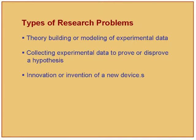Broadly, types of research problems include: theory building or modeling of experimental data — you have experimental data and provide a theory or model; collecting experimental data to prove or disprove a hypothesis — you design experiments to test whether a hypothesis is true; and inventing a new device or process and showing its utility. In the lecture on experimental skills we will see an example of how an experiment is designed to prove or disprove a hypothesis.